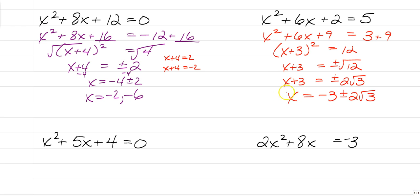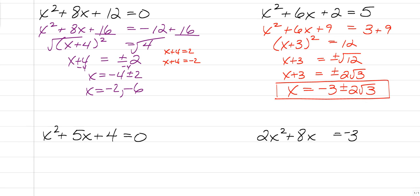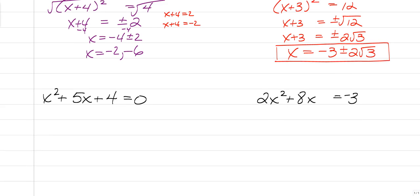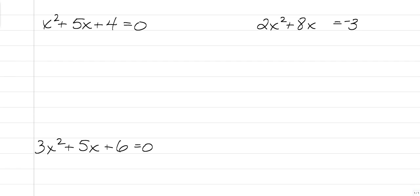That is one of the reasons why we need another way of solving a quadratic equation when we can't factor. There is another way we can do it as well, which we'll talk about in a later video. Now that you've just seen it done, why don't you pause the video and try this one — x squared plus 5x plus 4 equals 0 — so we can talk about it before we get to a couple that are a little bit more intense.